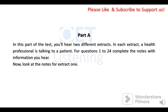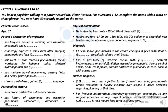Part A. In this part of the test, you'll hear two different extracts. In each extract, a health professional is talking to a patient. For questions 1 to 24, complete the notes with information you hear. Now look at the notes for Extract 1. Extract 1, questions 1 to 12. You hear a doctor talking to a patient called Mr. Victor Rosario. For questions 1 to 12, complete the notes with a word or short phrase. You now have 30 seconds to look at the notes.